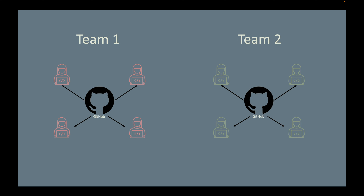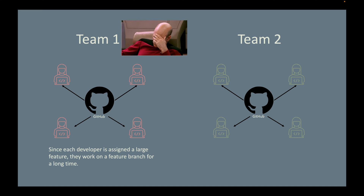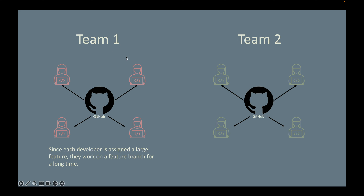For Team One, since a large feature is normally more complex, each developer works on a feature branch for a long time — say one month — without merging back to the central repository. Sounds scary, right? A consequence is that each developer's local repository gradually ceases to reflect the central repository.